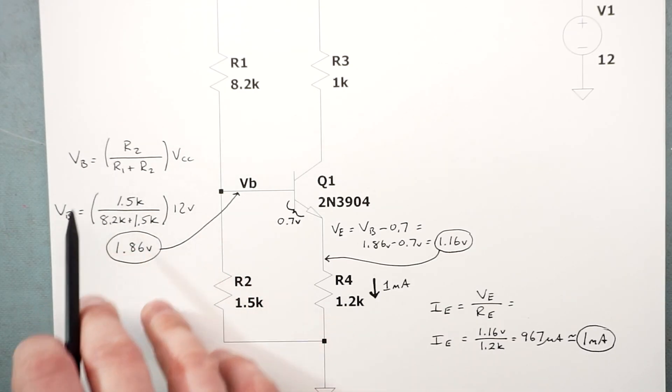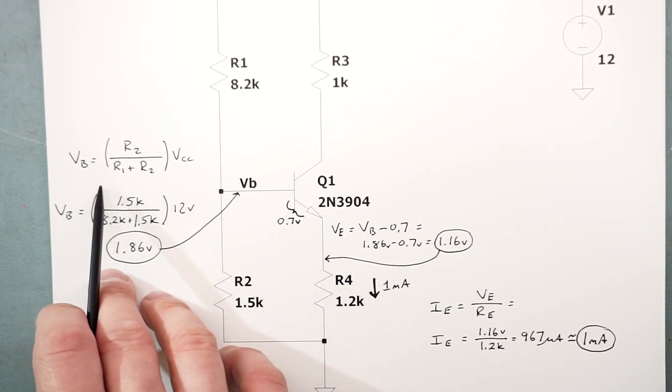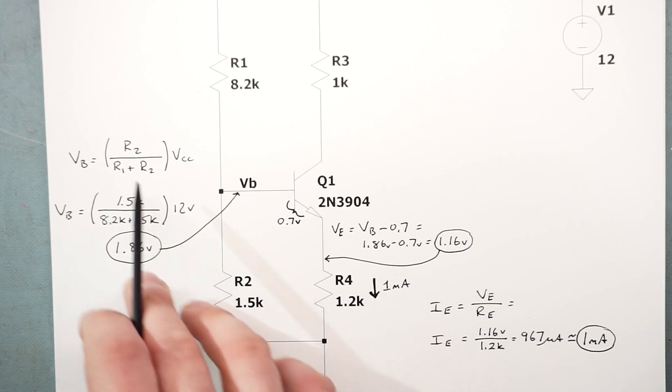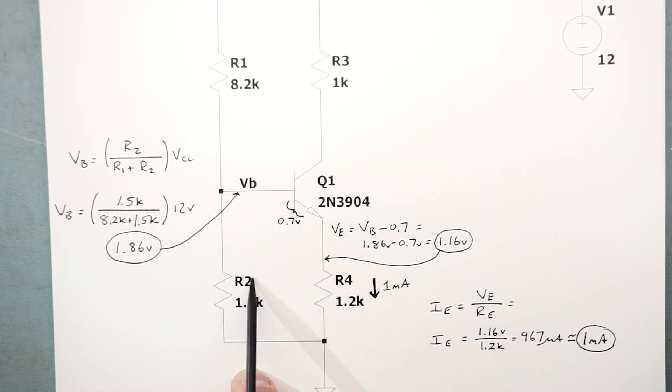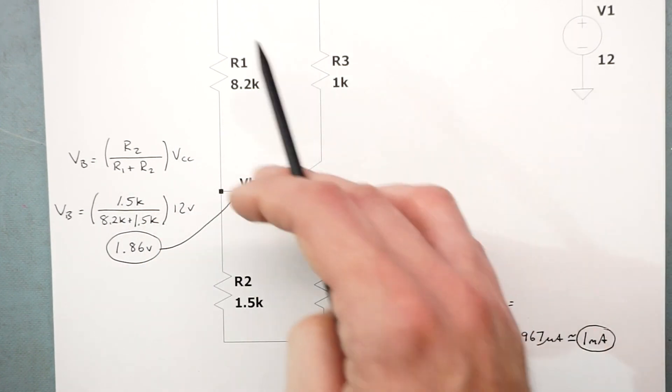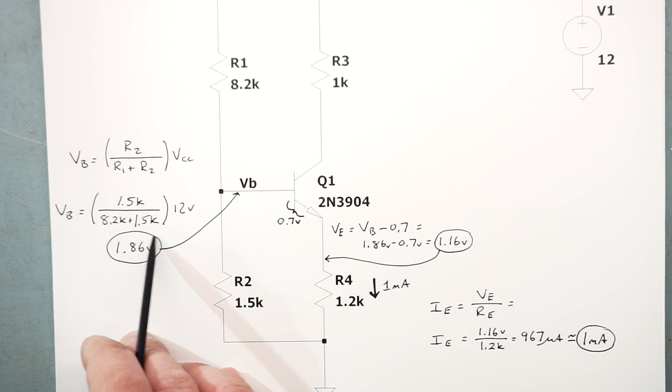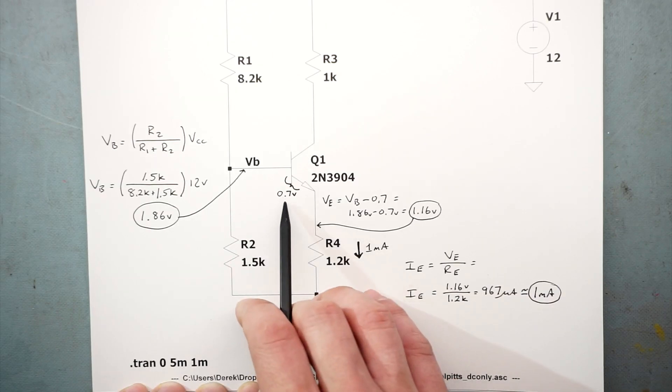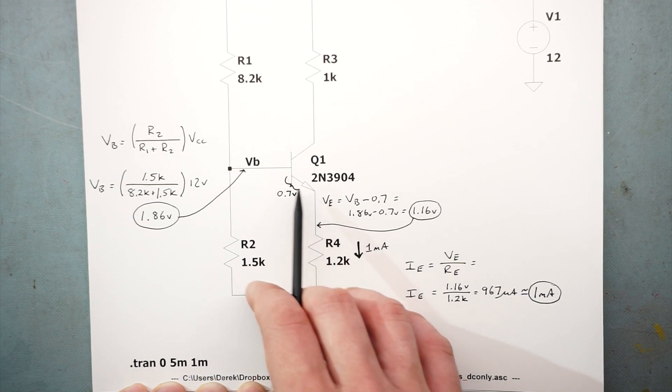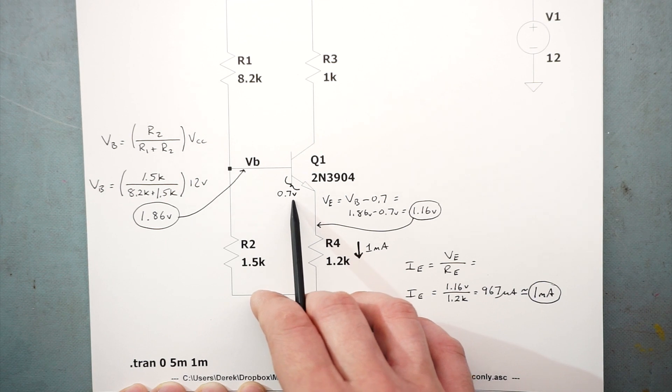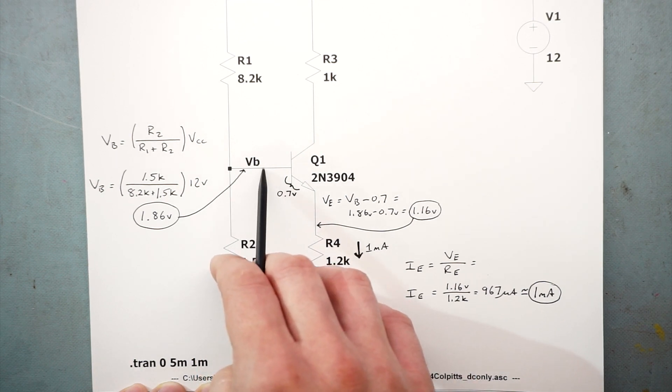I'm using the voltage divider formula which says voltage at my base is equal to R2 divided by the sum of R1 plus R2 times our supply voltage. That turns out to be 1.5k over 8.2k plus 1.5k times that 12 volts, leaving us with 1.86 volts directly at the base. We do lose 0.7 volts from base to emitter like a regular diode because of the barrier potential.